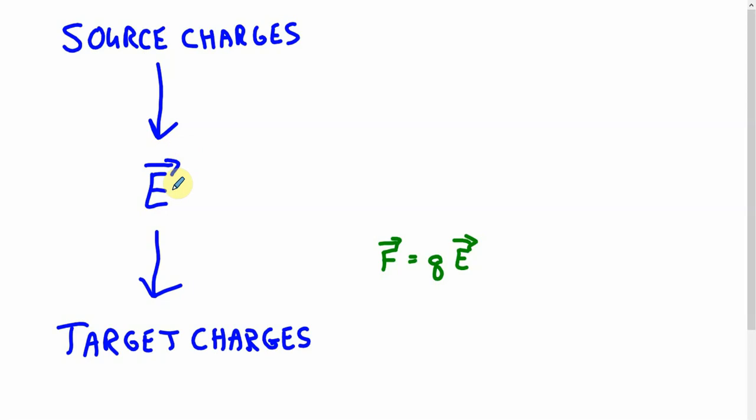Now, where did that electric field come from? Well, again, it's created by charges that are in the neighborhood. And a single particle with charge creates this much electric field, right? And it is pointing away from the charge.